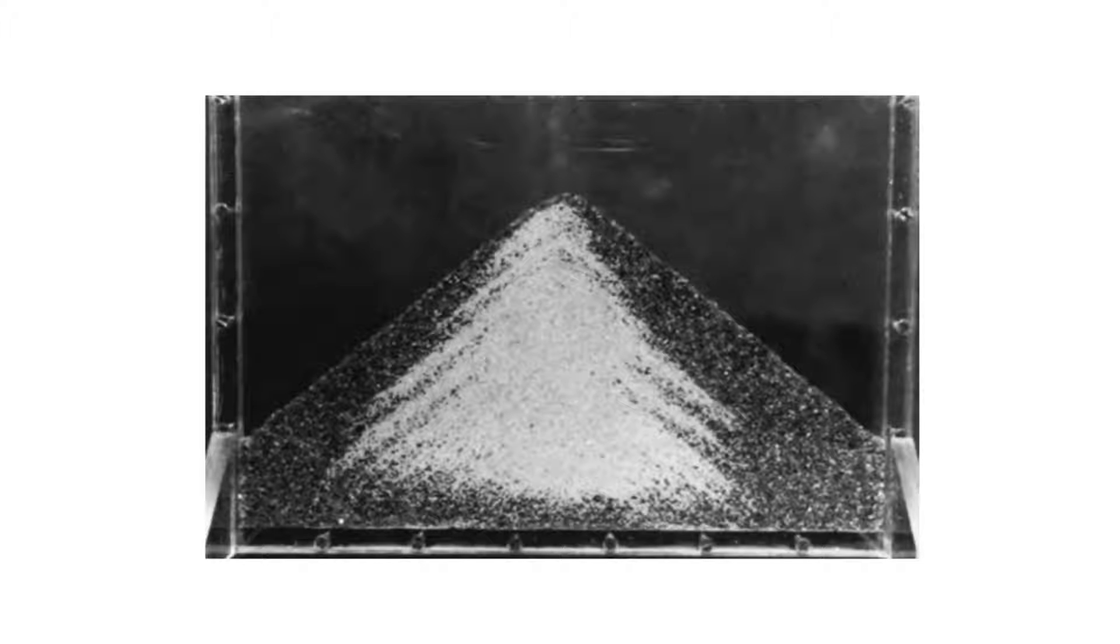This figure illustrates segregation in a heap formed by pouring a mixture of two different sized particles. You have your smaller particles forming towards the top, and your bigger particles rolling down towards the bottom.